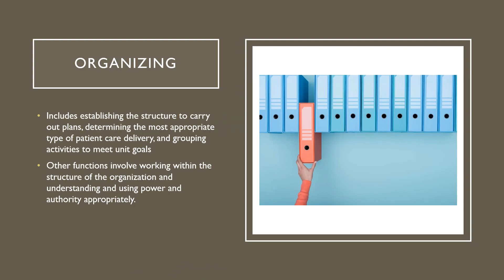Organizing is the second phase of the management process. Relationships are defined, procedures are outlined, equipment is readied, and tasks are assigned. This includes establishing the structure to carry out those plans, determining the most appropriate type of patient care delivery, and grouping activities to meet unit goals. Other functions involve working with the structure of the organization and understanding and using power and authority appropriately.